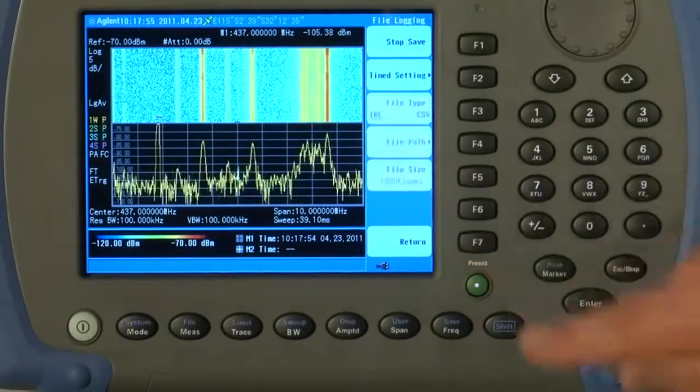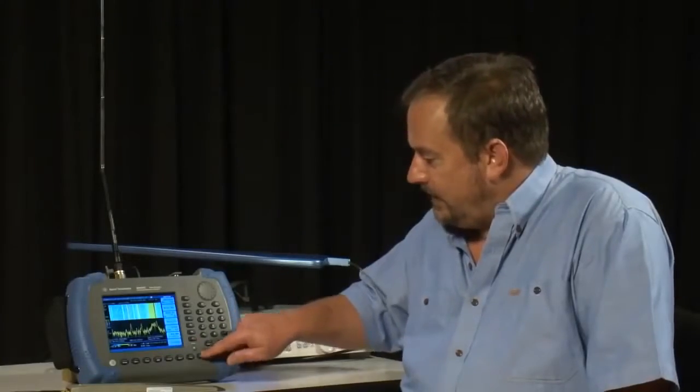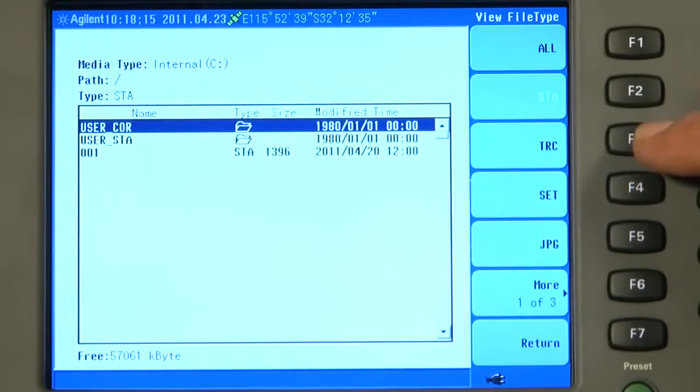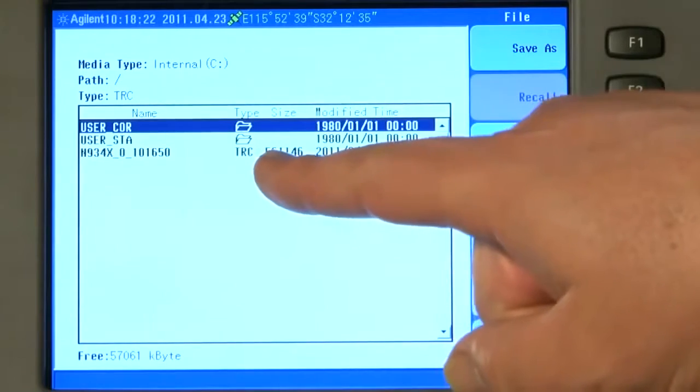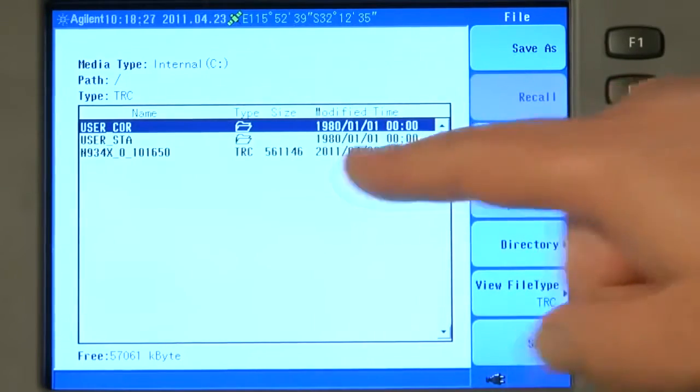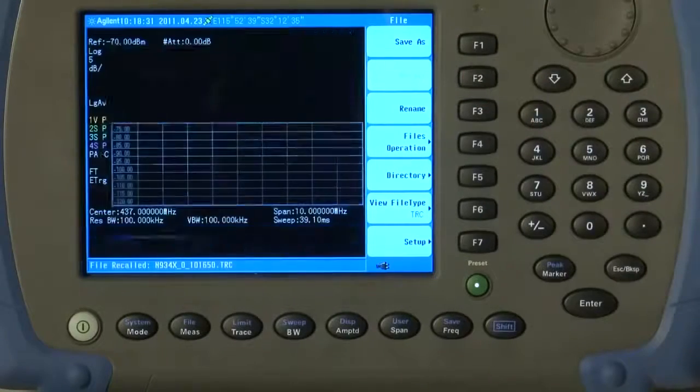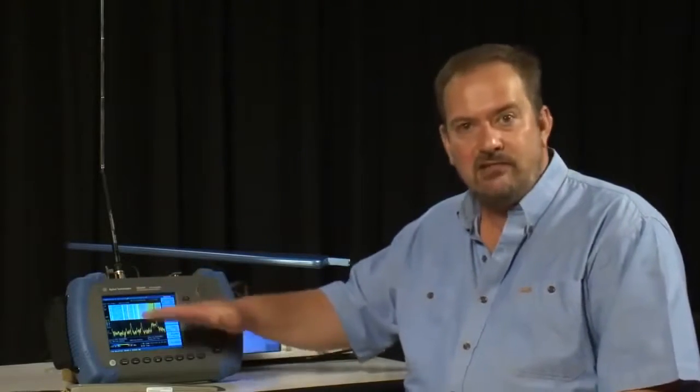I will press Return. If I now press Stop Save and press Shift File, and let us view Trace Data, you will see here the TRC, the trace file, that the unit has stored for the spectrogram logging. Here, stored at 20 past 10 in the morning on the 23rd of April. So, if I scroll down to that and press Recall, now I have called back onto the screen the entire spectrogram trace log that we have just recorded.